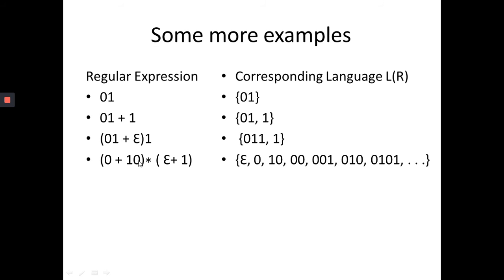Then, (0 or 1)0 bracket closure (epsilon or 1). Again, you can check the language, it is epsilon, then 0, then 10, and then closure of it. That means this can repeat any number of times, so I can repeat as 0, 00, 0010, 01010, likewise. So these are some examples.